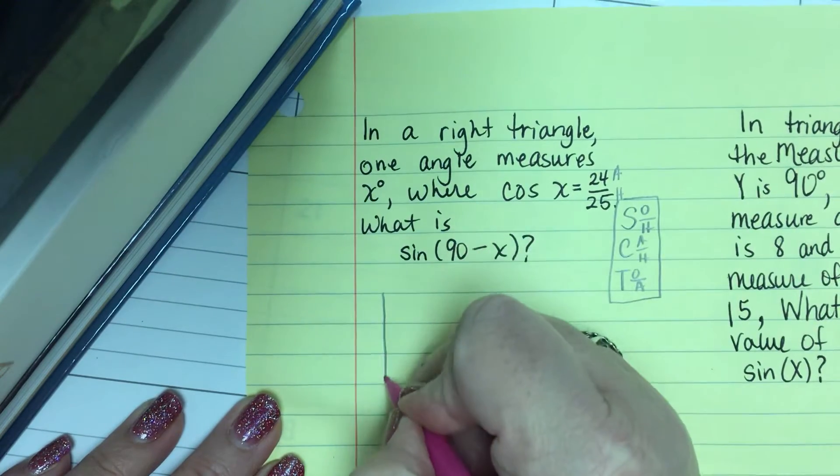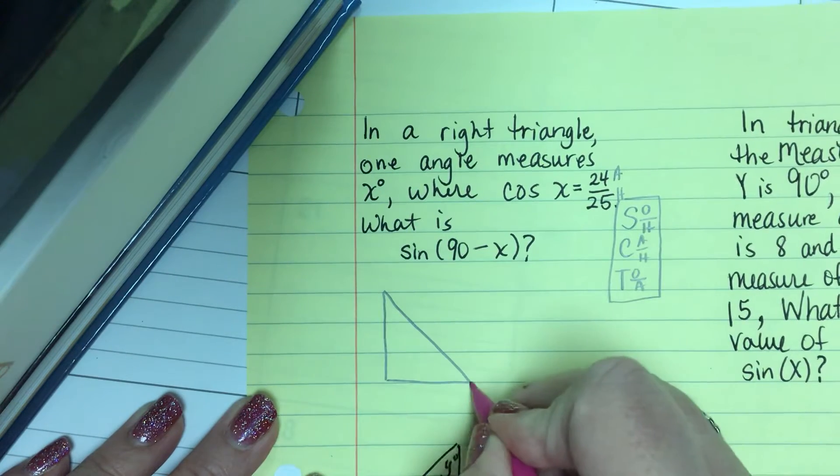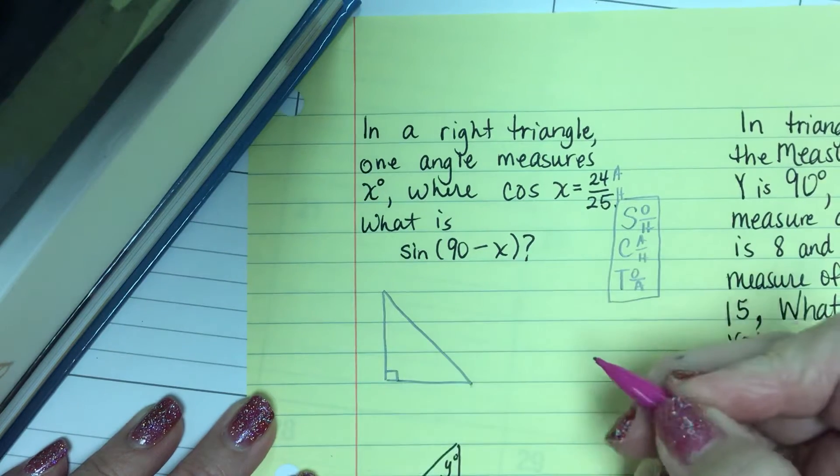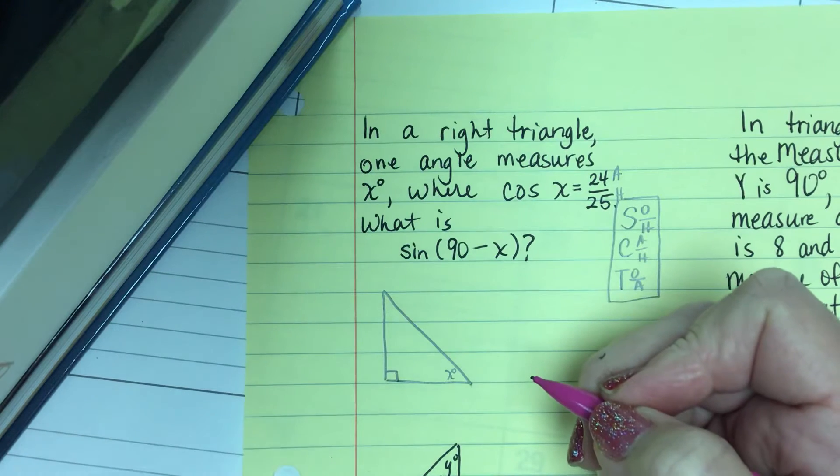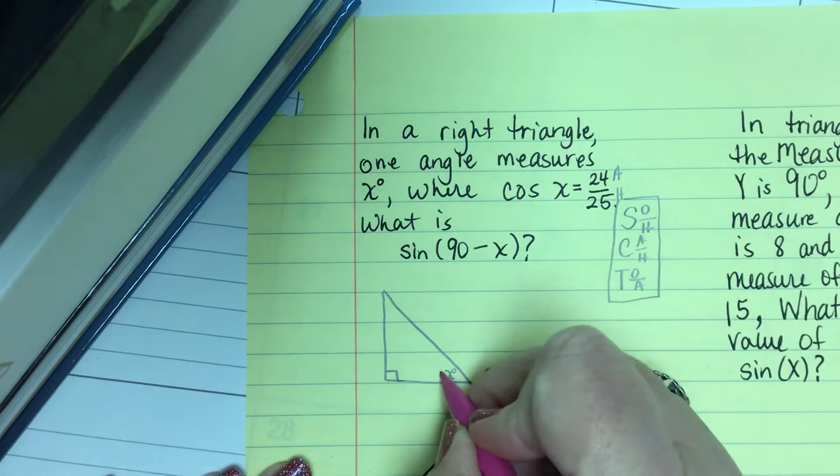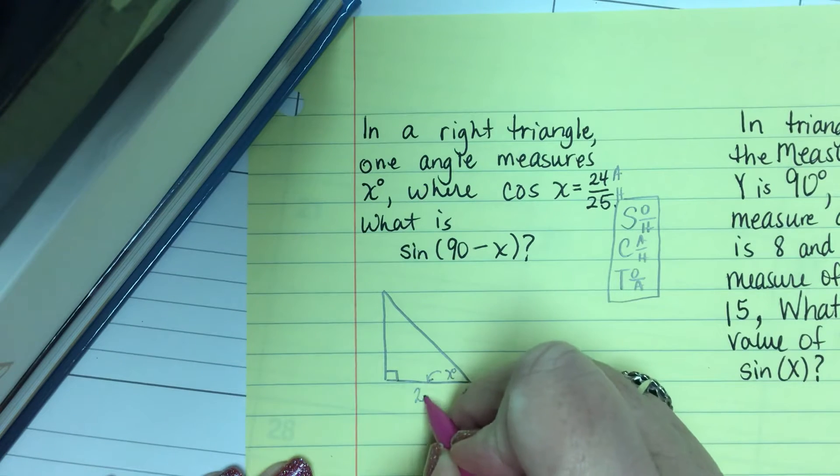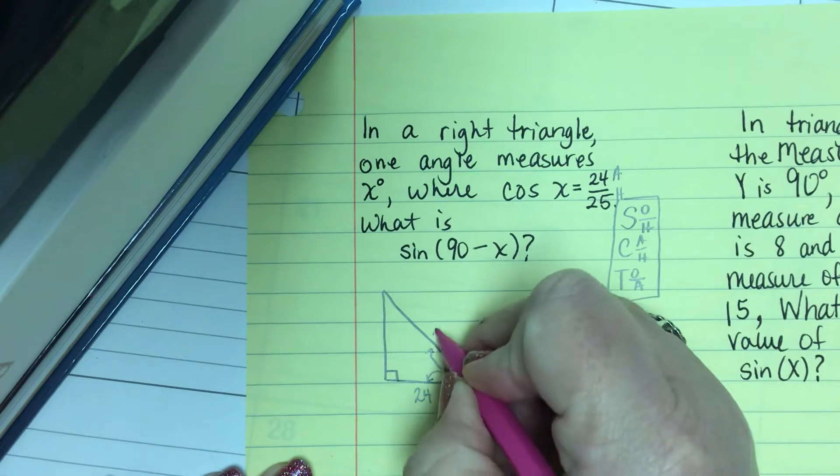So I'm going to draw a triangle, a right triangle obviously, and I'm going to put x here, and adjacent to x, here's adjacent, is 24, and the hypotenuse is 25.